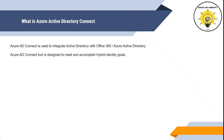By definition, Azure AD Connect is a Microsoft tool that is used to integrate your on-premise Active Directory with Office 365. By using Azure AD Connect, you can synchronize your Active Directory objects to Azure Active Directory, and the Azure AD Connect tool is designed to meet hybrid identity goals.